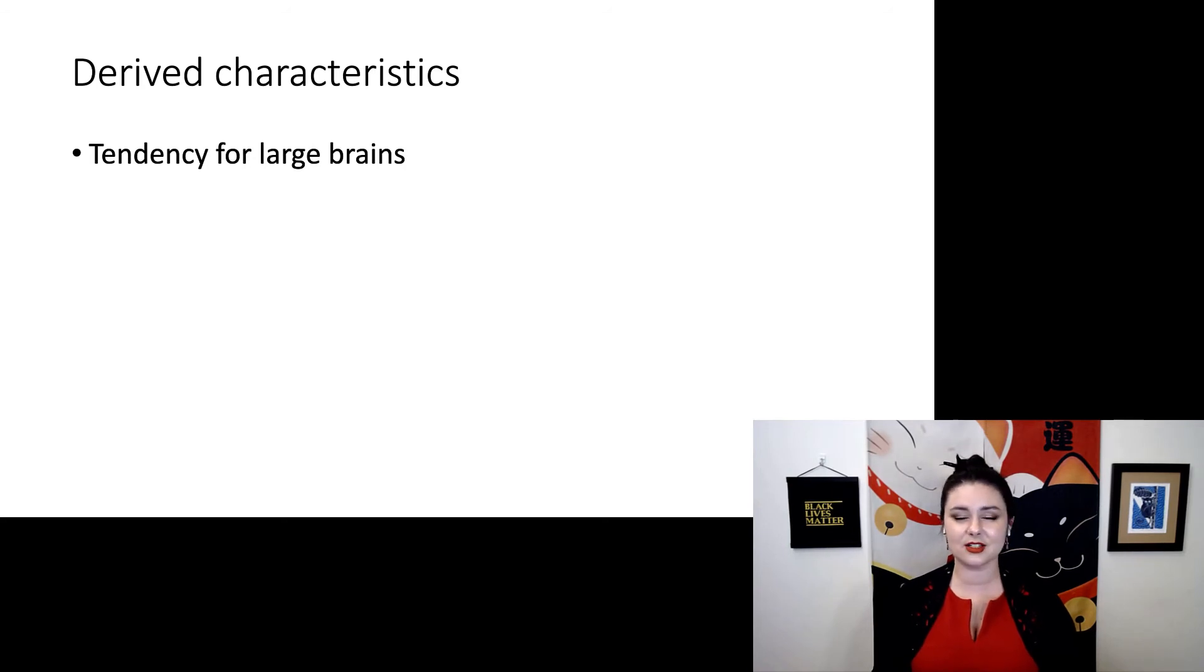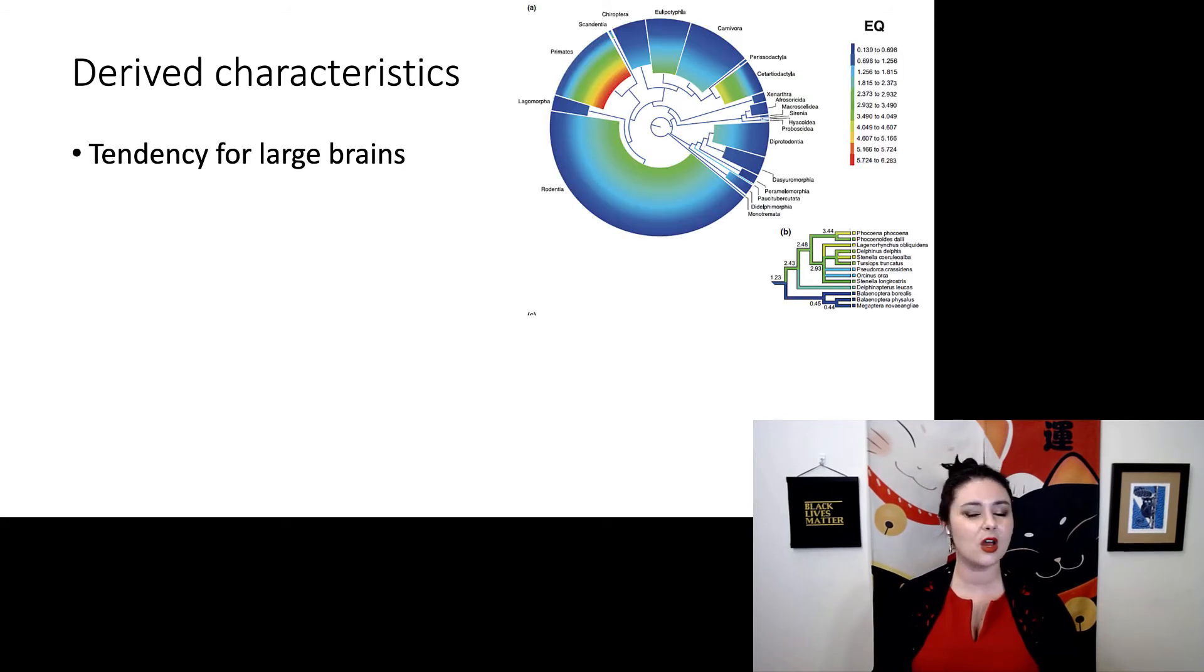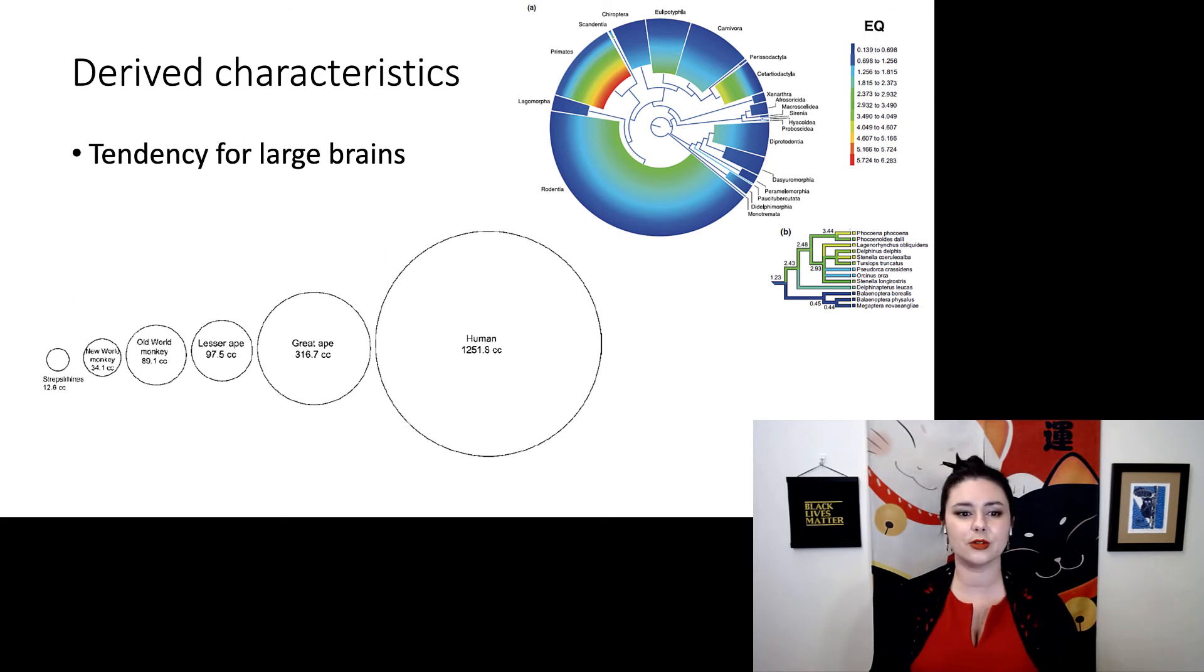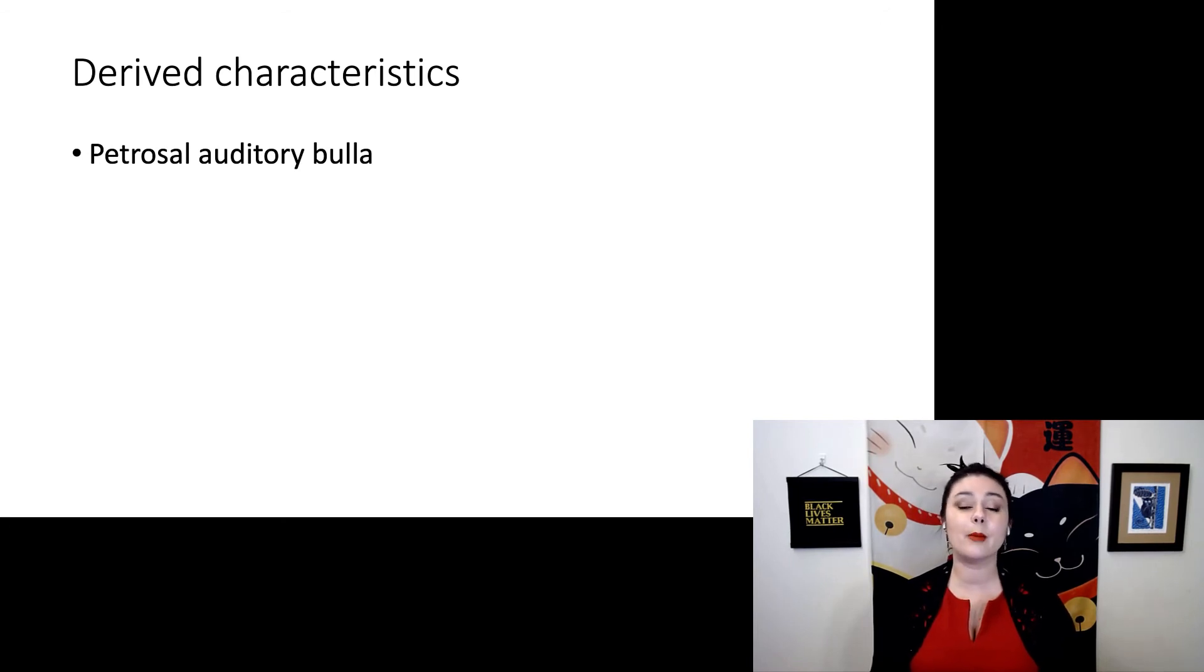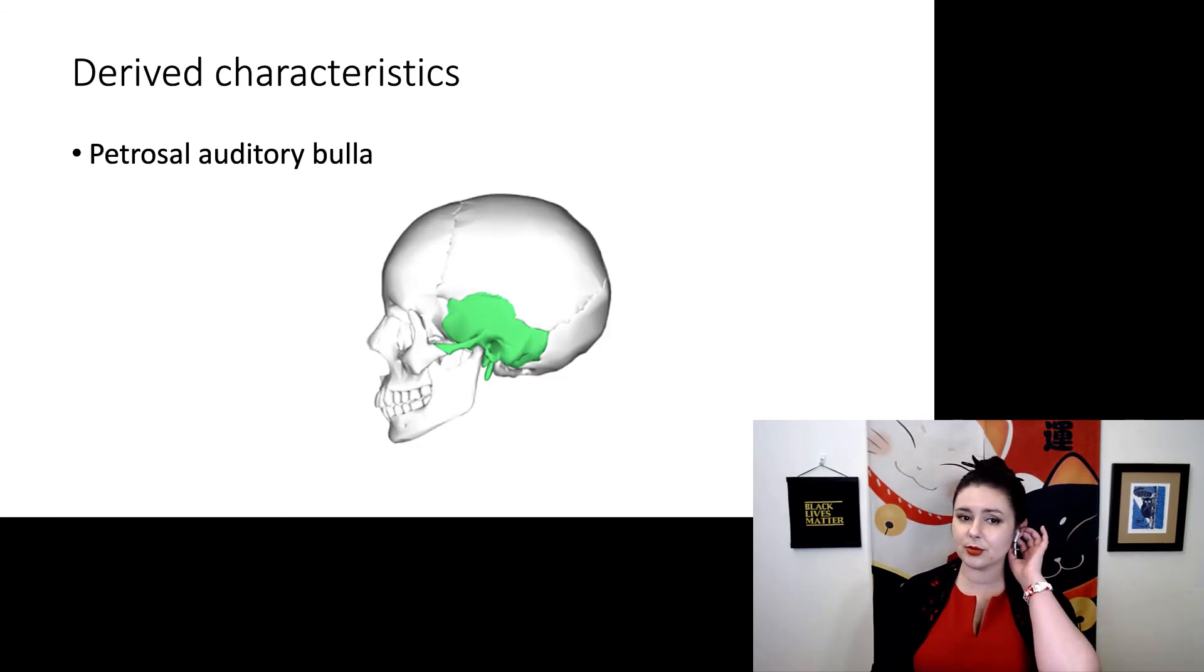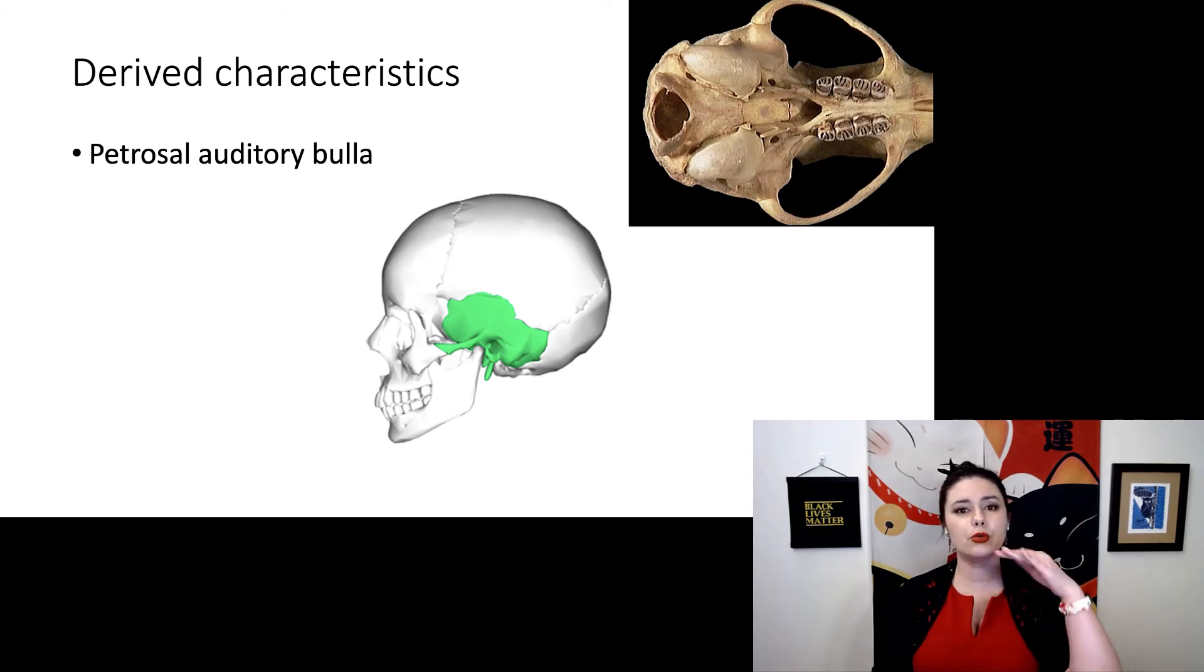We also see just a tendency for large brains in primates. Overall, all primates have slightly larger brains than we see for other mammals. And so here you can see a little bit of a comparison. Still, our strepsorhines, they do have smaller brains than everyone else. But overall, the entire group, all of us have larger brains. We do also see something called a petrosal auditory boa. There are many different bones in our cranium. And here we have our petrosal bone, and that is the bone that has grown over the auditory part of our cranium. In different mammal groups, it's actually a different part of our cranium that forms that bulb. For whatever reason, it's the petrosal bone in primates.